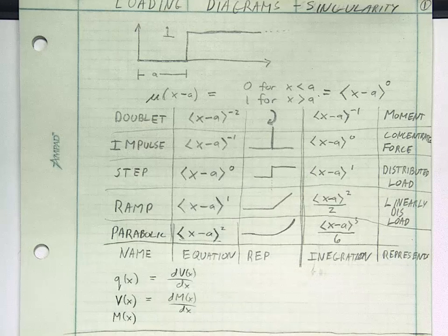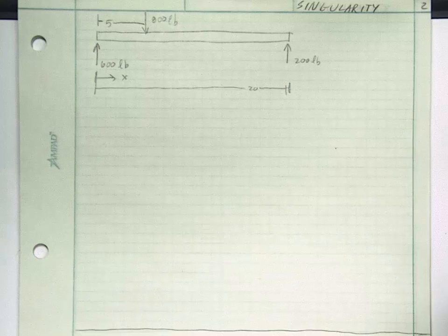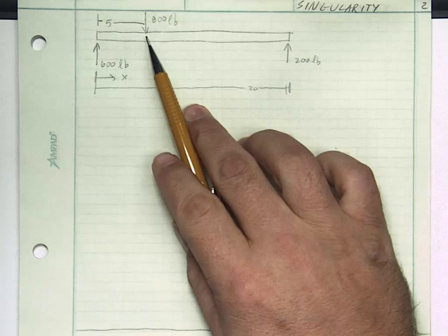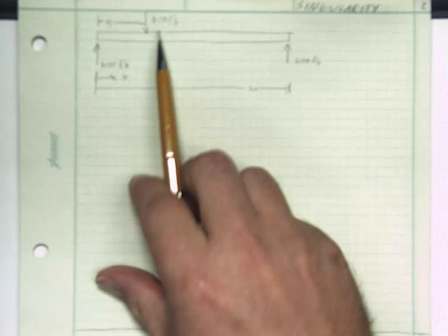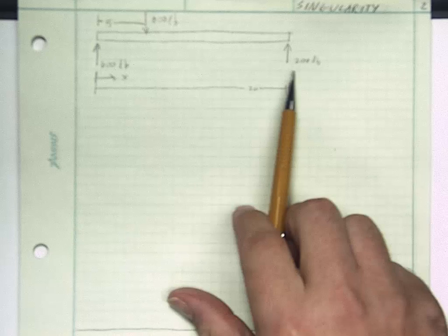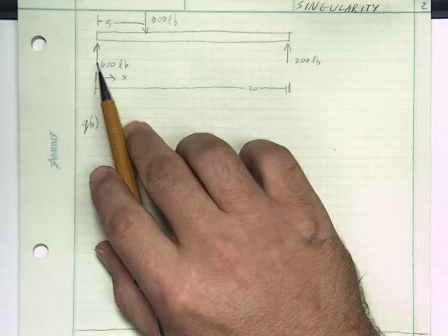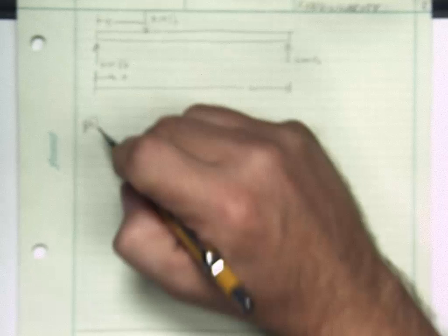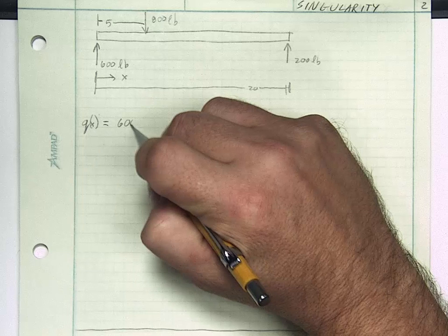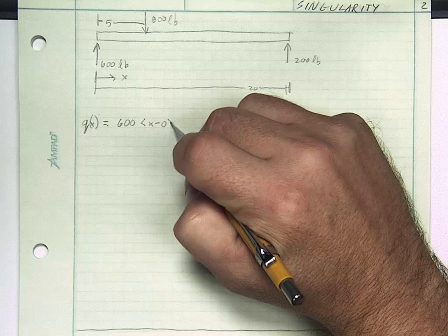Let's look at the example we did last time and consider how that would work. The example we did before had a concentrated load with two supports, and I've already done the free body diagram analysis to understand what the reaction forces are: 800 pounds and reaction forces of 200 pounds. Let's write this now as q of x. The first thing I need to do is consider when things turn on. I have a positive concentrated load that turns on when x is equal to 0.